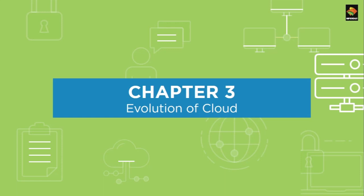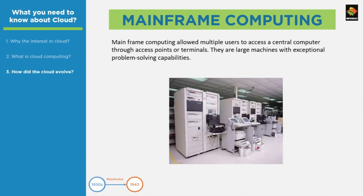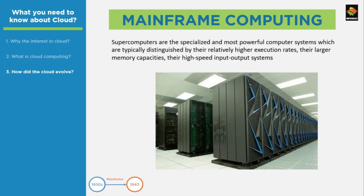Now that you have a brief idea about what cloud can do for your business, let us look at the important milestones in the evolution of cloud computing. The evolution of cloud began in the mid-1900s with mainframe computing. These mainframe computers were usually used by large organizations for bulk transactions requiring high reliability. They are different from supercomputers, which are designed to solve specific, highly complex problems.